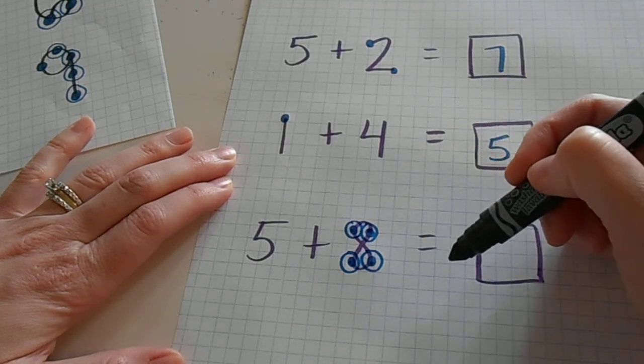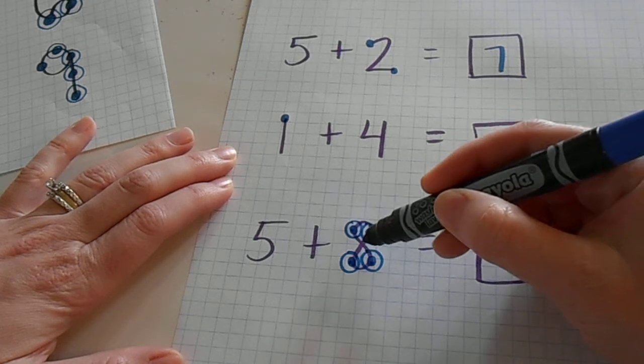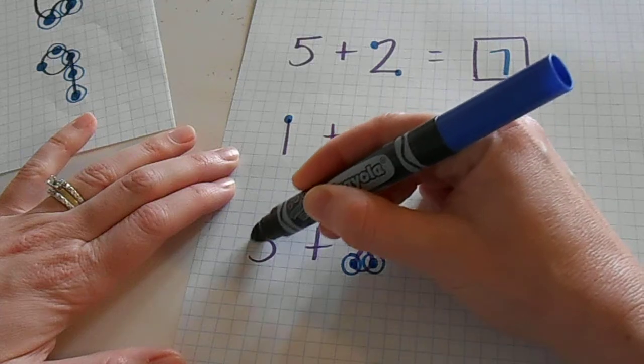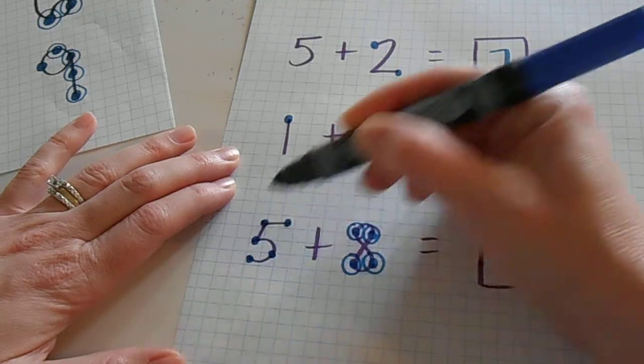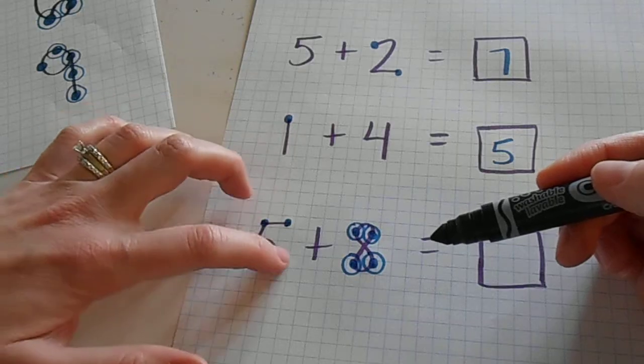And then they can use those dots when they're counting. In this case, this is the bigger number. So they would start with this one anyways and count on to five. I'm sorry, count on with five. So we start with eight, nine, ten, eleven, twelve, thirteen.